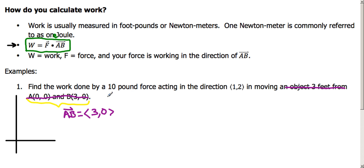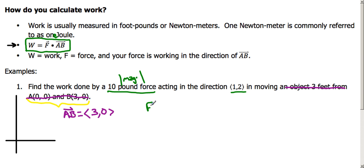Now we need to focus on the force vector part. We have a ten-pound force in the direction (1, 2). The ten-pound force tells us our magnitude, and (1, 2) tells us the direction. But this isn't in component form yet — we have the magnitude and the direction, and we need to get it into component form. What we need to do is make this a unit vector, so we can multiply that by a magnitude of 10 to get our component vector for our force.